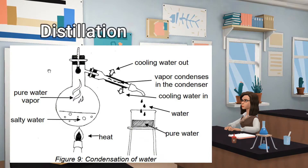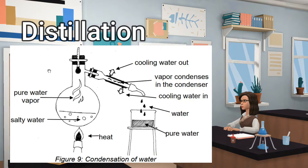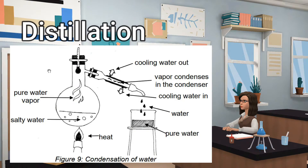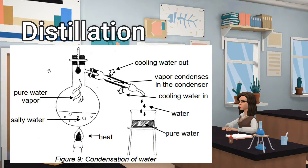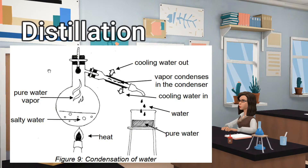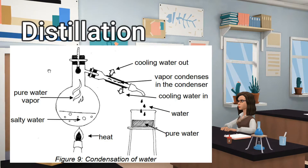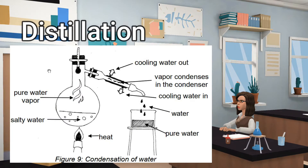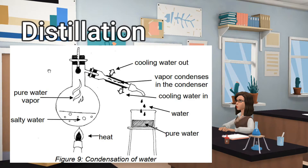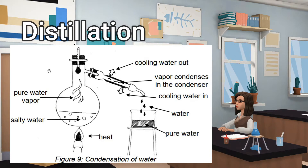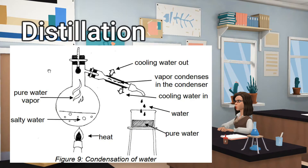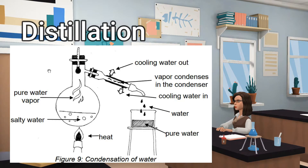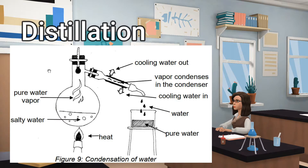Distillation: It is a method of separating the solvent from a solution. For example, water can be separated from salt solution by simple distillation. This method works because water has a much lower boiling point than salt. When the solution is heated, the water evaporates, is then cooled and condensed into a separate container. The salt does not evaporate and so it stays behind. Note that every substance has its own particular melting point and boiling point.